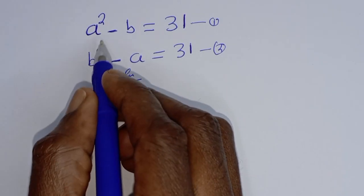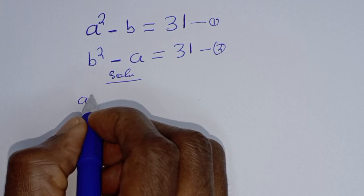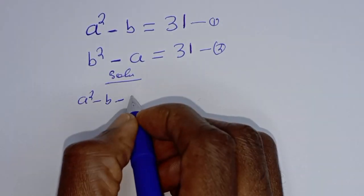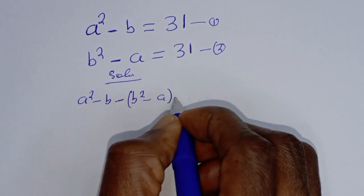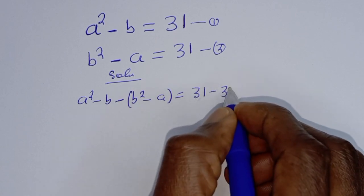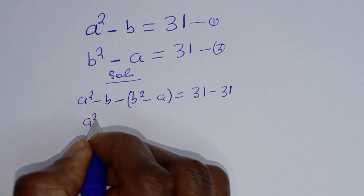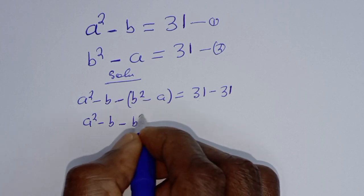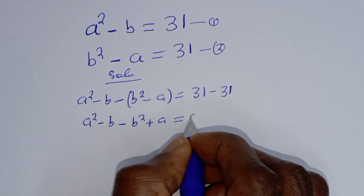Now let's subtract equation 1 from equation 2. That is A squared minus B minus (B squared minus A) is equal to 31 minus 31. So A squared minus B minus B squared plus A is equal to 0.